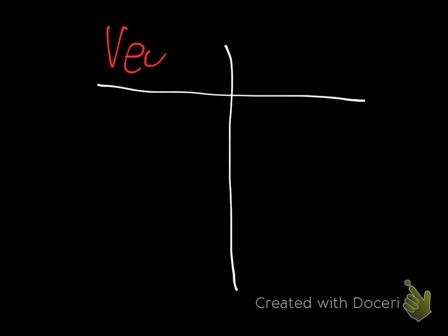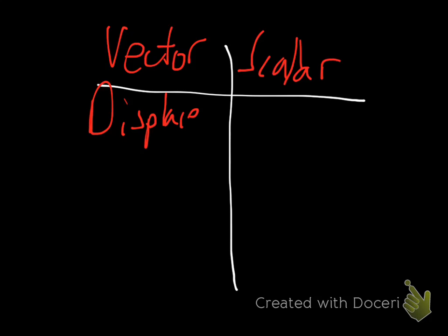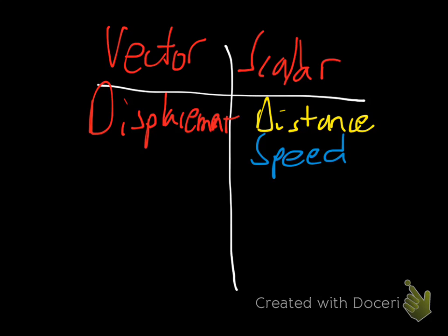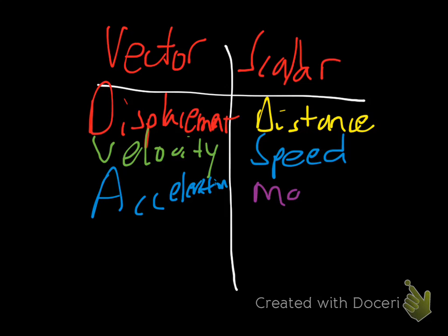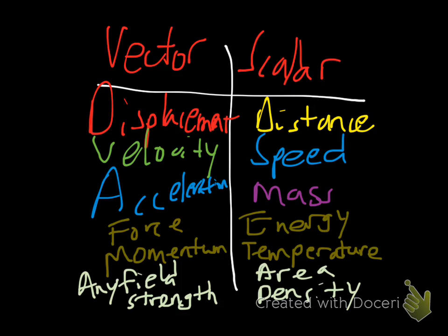So, some examples of vector and scalar quantities include displacement for vectors, distance for scalar, speed, velocity, acceleration, mass, and a whole lot more.